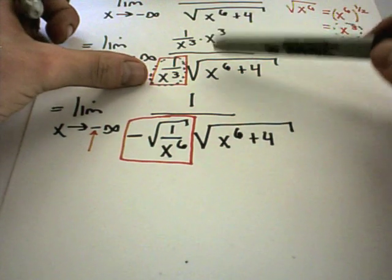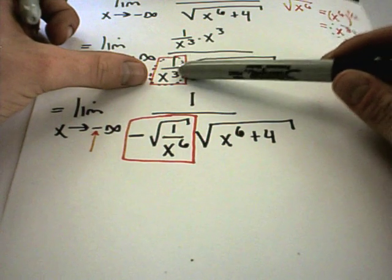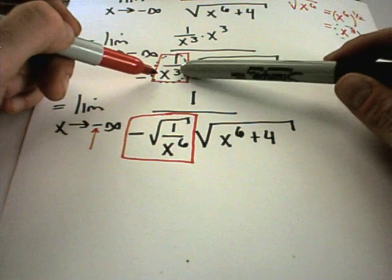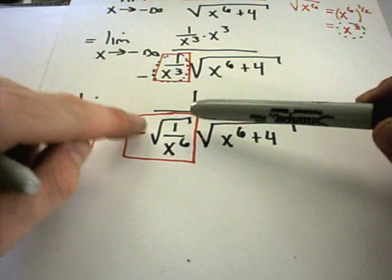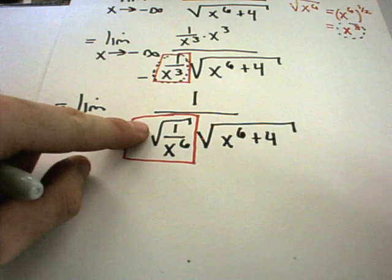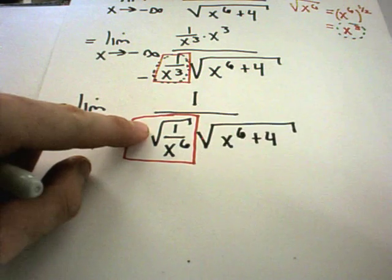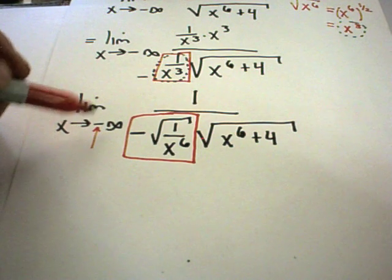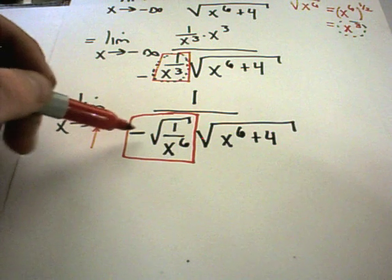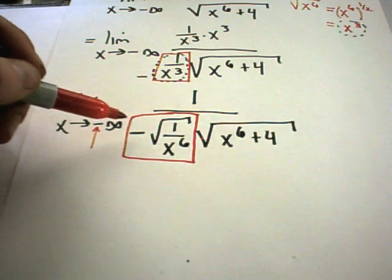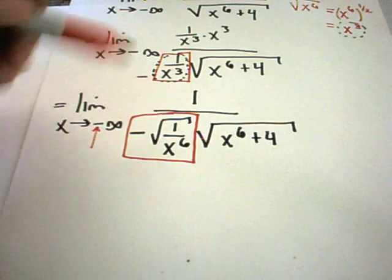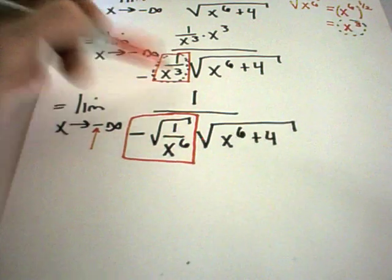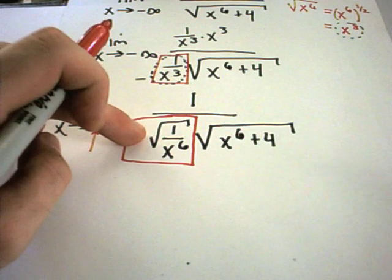If this original term I was dividing by had been 1 over, say, x to the fourth, well, if I plug a negative number into 1 over x to the fourth, it would be positive. And when I rewrote this as 1 over x to the eighth, I wouldn't need the negative because it would still be positive just like it should be. So people sometimes get confused and think, oh, if I'm going to negative infinity and I do this, I should automatically tack on a negative. And that's not correct. If the original thing is negative, yes, then tack on a negative sign. If it's going to be positive at the beginning, don't use the negative and just leave it alone.